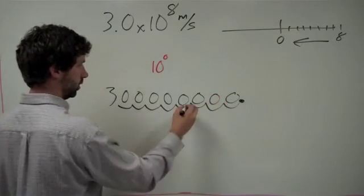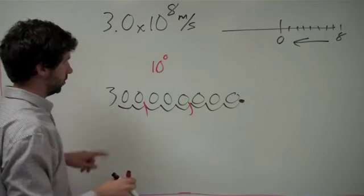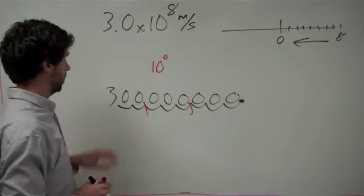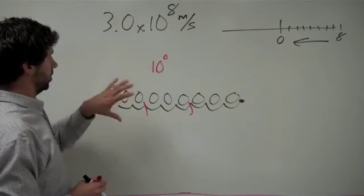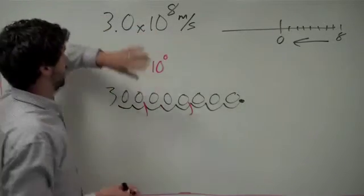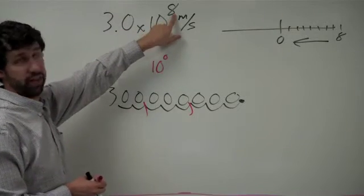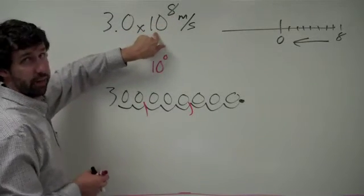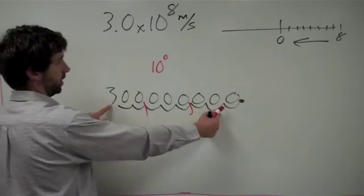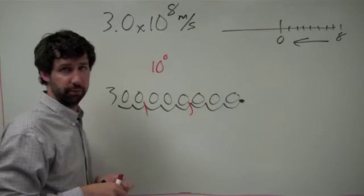So then I would have a comma here and a comma here. And so it turns out that's actually 300,000,000. A good way to check for reasonableness: this is a really big number. It has a positive power of 10 — we're multiplying by 10 eight times. So this is a really big number and our reasonableness check checks out.